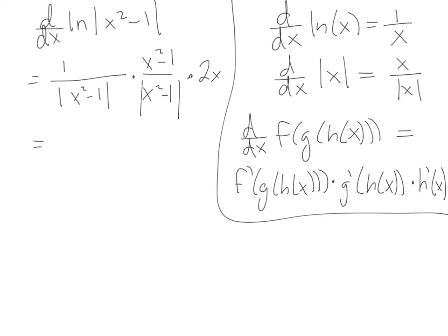I'm going to just squash this all into one fabulous fraction, and so I've got 2x times the quantity x squared minus 1 on top, and on the bottom I've got the absolute value of x squared minus 1 squared.